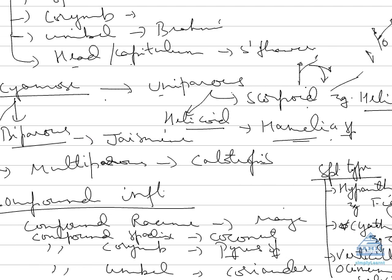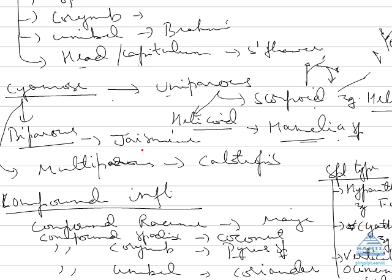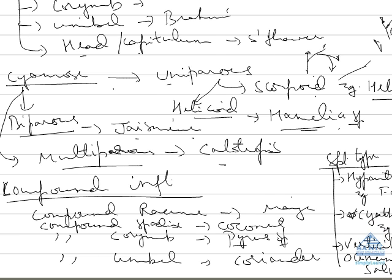Now coming to biparous: at each step of the old flower, we are having two bifurcations, example in jasmine. And multiparous example in Calotropis.